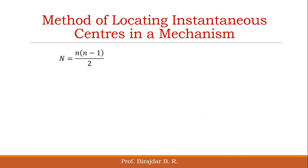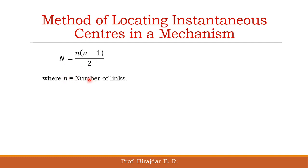Now, what is the method of locating the instantaneous centers? There is one formula: N = n(n-1)/2, where capital N means the number of instantaneous centers, and small n is the number of links. Based on that, we will get how many instantaneous centers exist for that particular mechanism.